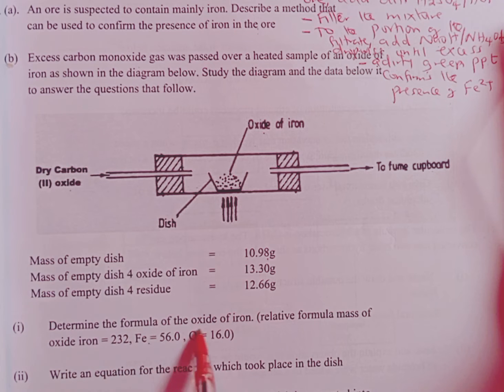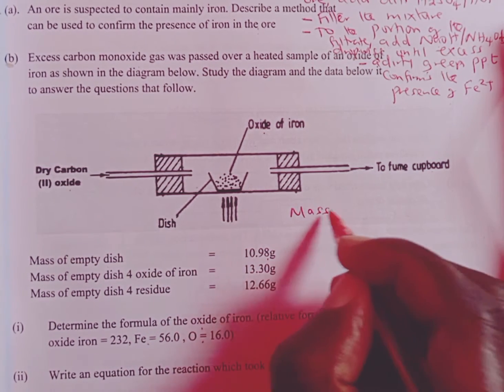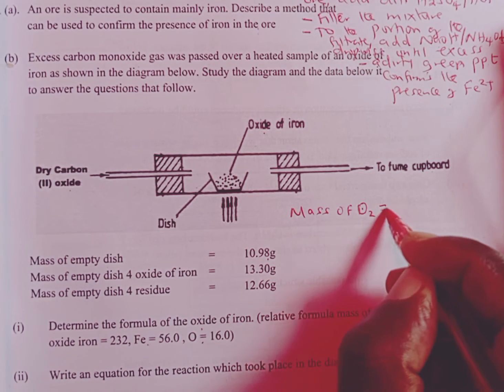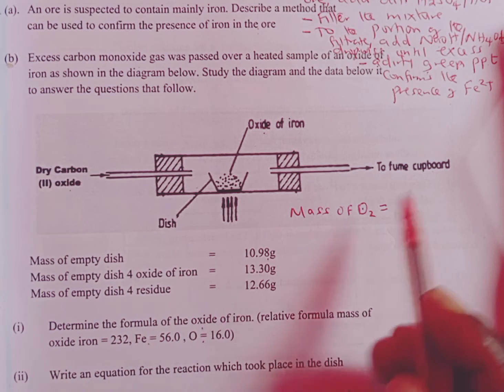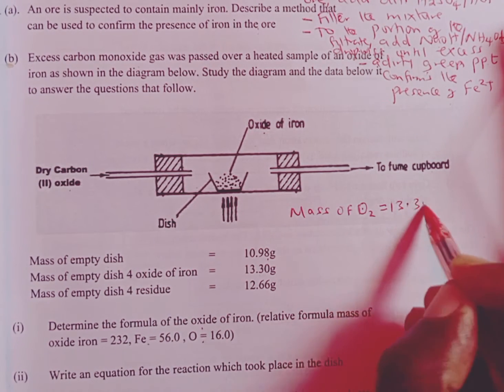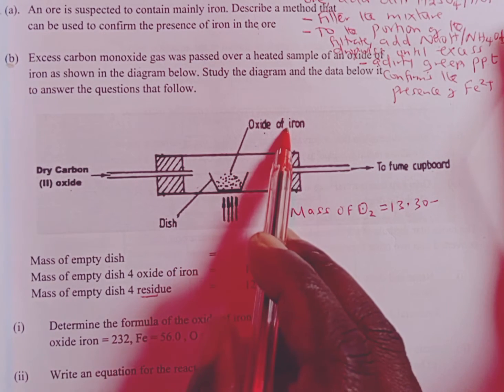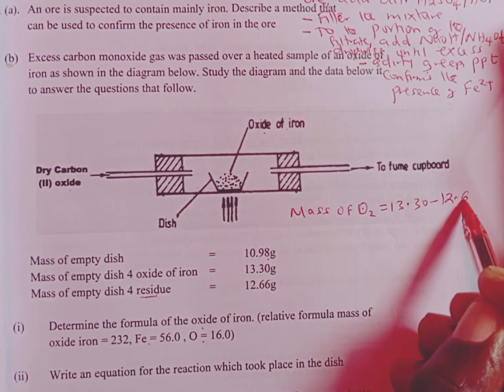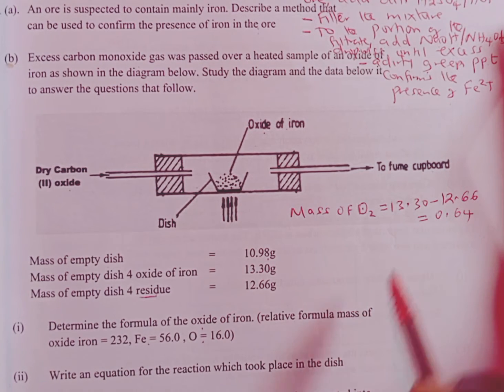So for us to determine the formula of the oxide, the first thing we are going to start by looking at the mass of oxygen. To get the mass of oxygen, we take the mass of an empty dish plus the oxide, which is 13.30, we minus the mass of the empty dish plus the residue. The residue represents our iron once oxygen is off. And therefore we are going to subtract 12.66, which is going to give us 0.64. That will be the mass of oxygen.